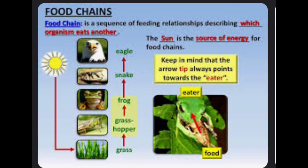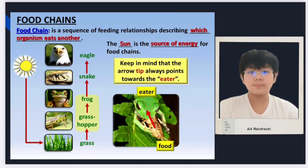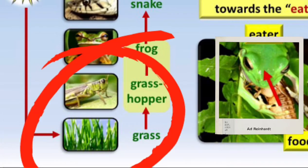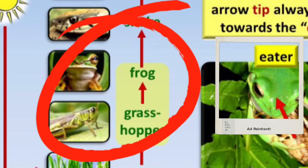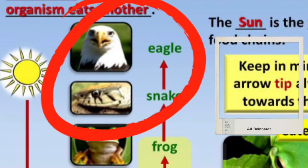Here is an explanation of the food chain for you to understand better. The food chain is a sequence of feeding relationships describing which organism eats the other. The sun is the source of energy for the food chains. Keep in mind that the arrow tip is always pointing towards the eater. The grasshopper eats the grass, the frog eats the grasshopper, the snake eats the frog, and the eagle eats the snake.